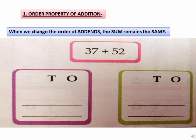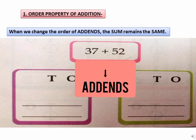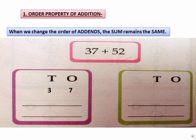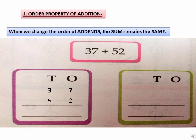Let's understand this with the help of a given example. Here, the numbers are 37 and 52. 37 and 52 are addends. Let us arrange and add. 37 is 3 tens and 7 ones. 52 is 5 tens and 2 ones.